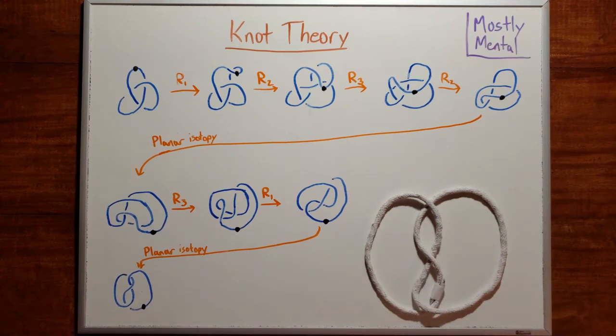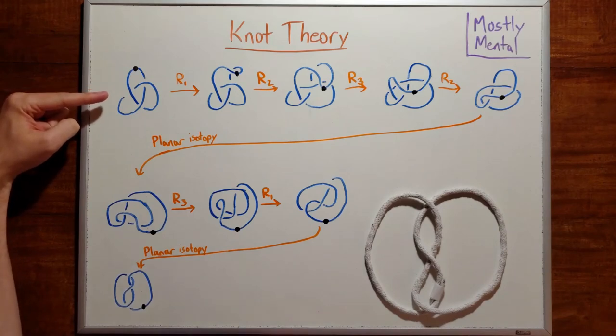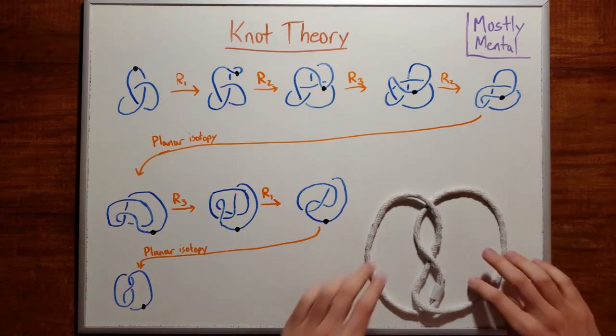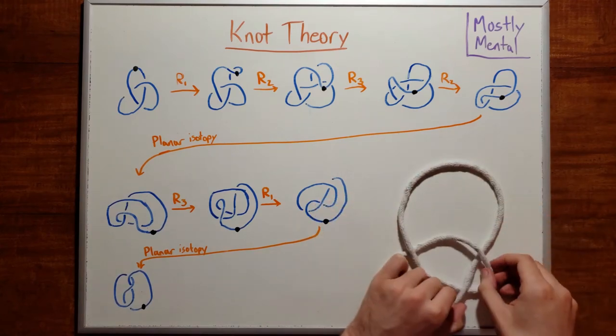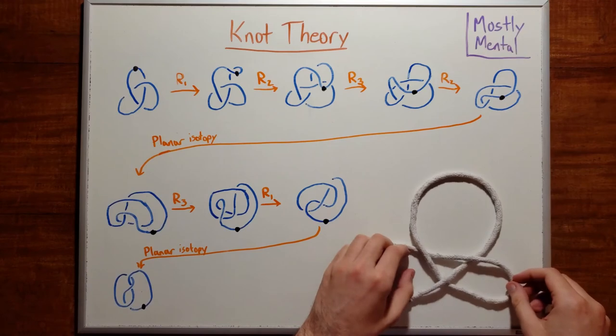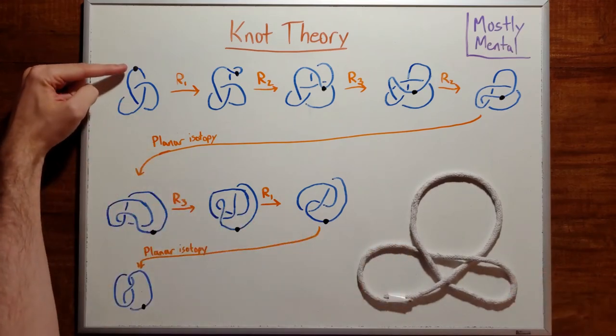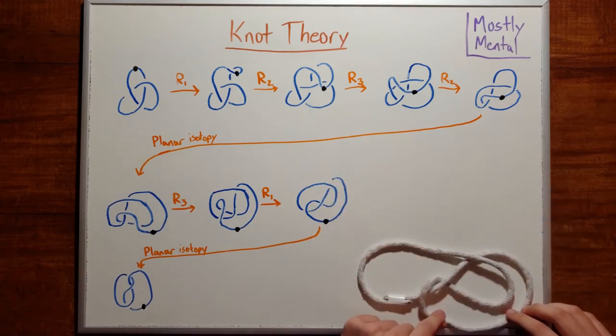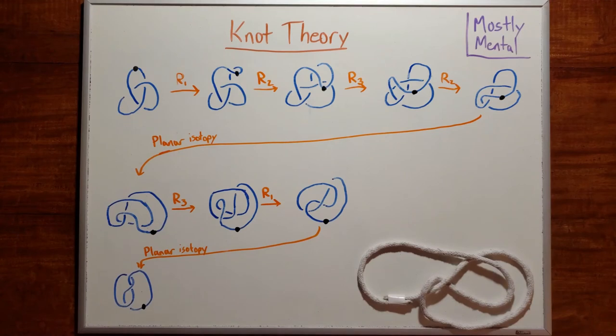So once again, we've transformed this diagram into this one, but this time using only the Reidemeister moves. And you can see that we're really doing the same thing we did before. If you follow the path of the top point, this black dot, it is just going from top to bottom, all the way across. But now we're doing it one small step at a time.